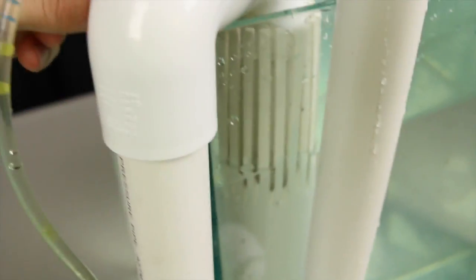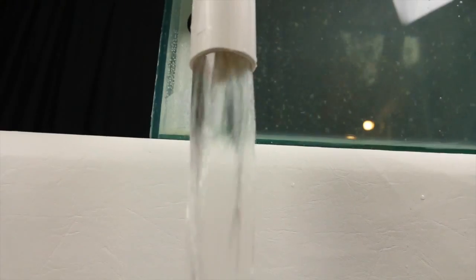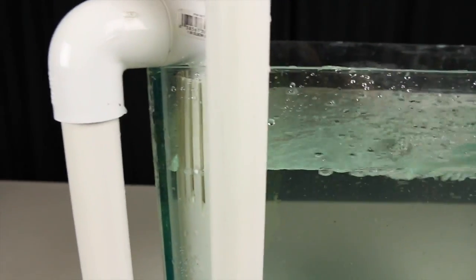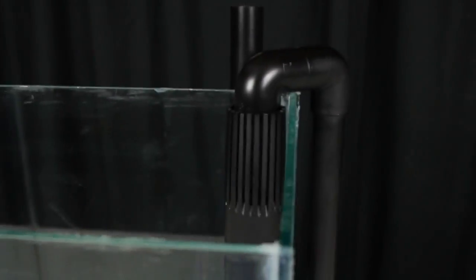Now to prime this overflow you just seal both ends turn your pump on and it's going to suck out all of the air and fill it with water. Now you'll want to keep this pump on continuously and it will ensure that air cannot collect in that pipe making the overflow now fail proof.